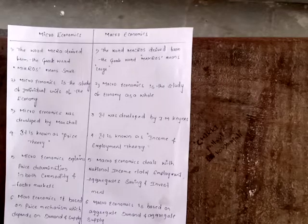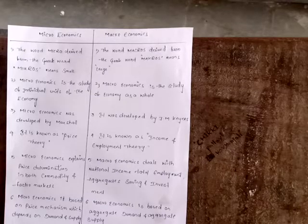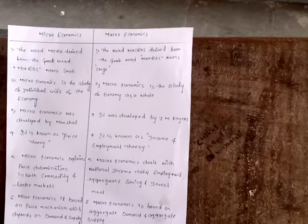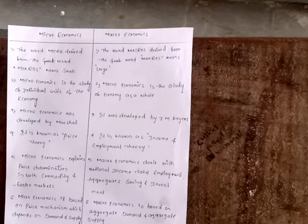Hi students, today we learn about one of the important questions of microeconomics and macroeconomics differences. In our modern economic theory, words are divided into two parts, namely microeconomics and macroeconomics. The first use of the words micro and macroeconomics in economic theory was in 1933 by Ragnar Frisch at the University of Oslo, Norway.